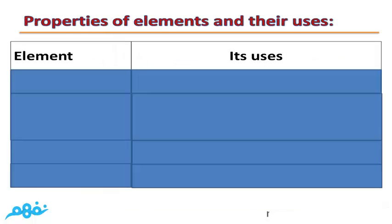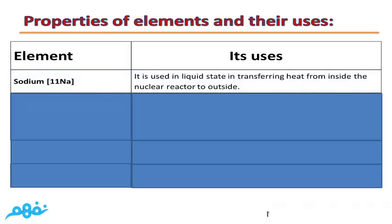Properties of elements and their uses: Sodium is used in liquid state for transferring heat from inside a nuclear reactor to outside, because Sodium is a metal and a good conductor of heat and electricity.